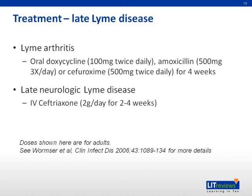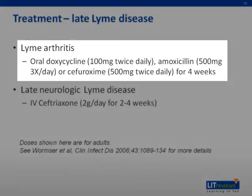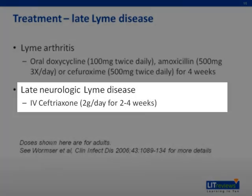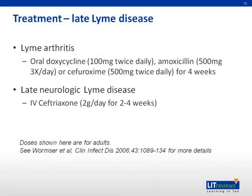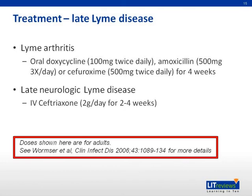For patients with late-stage Lyme disease, treatment is over a longer period. For Lyme arthritis, doxycycline, amoxicillin, or cefuroxime could be used, but over a period of four weeks. For patients with late neurologic Lyme disease, IV ceftriaxone has to be given at two grams per day for two to four weeks. For more information on doses and choice of antibiotics, refer to the reference at the bottom of the slide in the Clinical Infectious Diseases 2006 paper, where this issue is discussed in greater detail.